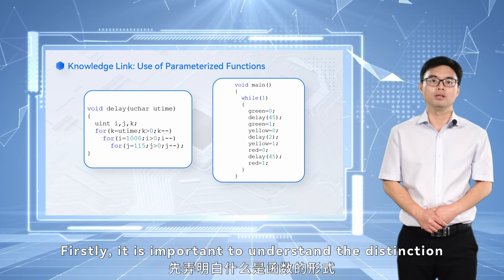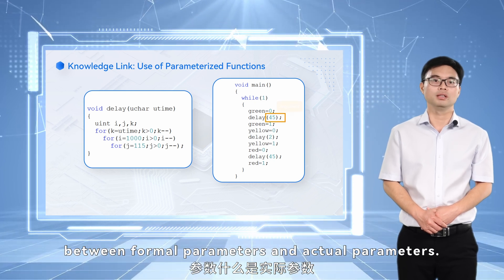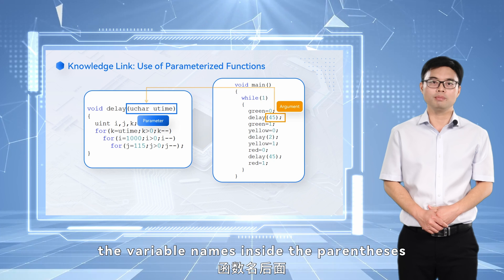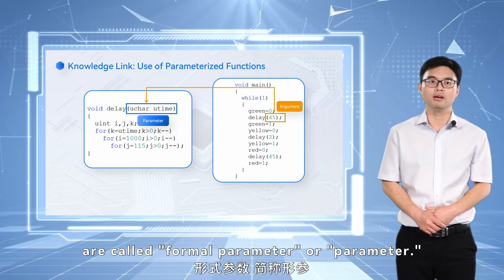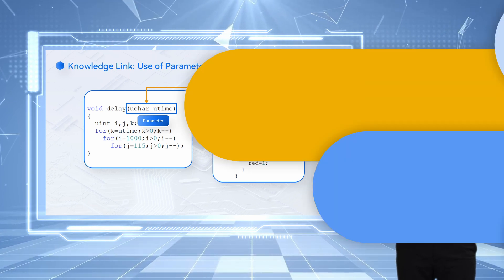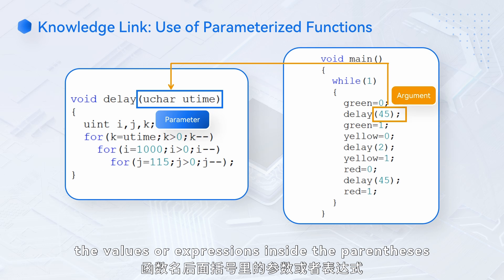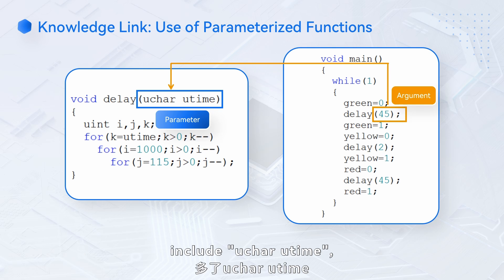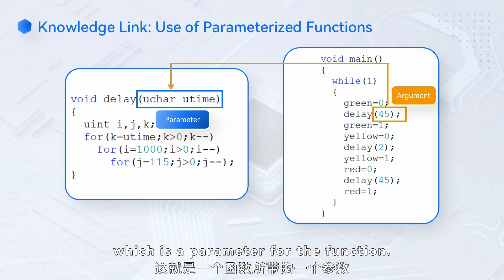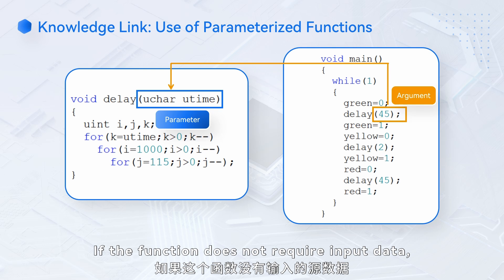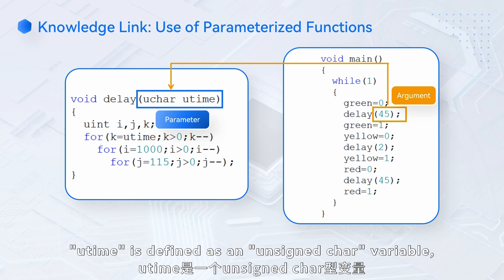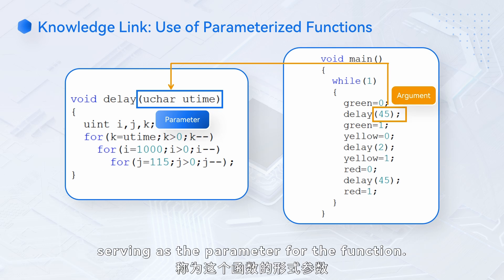It is important to understand the distinction between formal parameters and actual parameters. When defining a function, the variable names inside the parentheses after the function name are called formal parameters. When calling this function, the values or expressions inside the parentheses are called actual parameters or arguments. The parentheses following the delay function include ucur uTime, which is a parameter for the function. If the function does not require input data, the parameter can be omitted. In this example, uTime is defined as an unsigned char variable, serving as the parameter for the function.